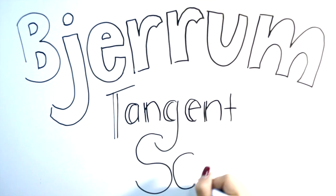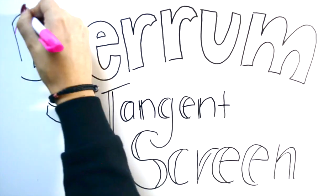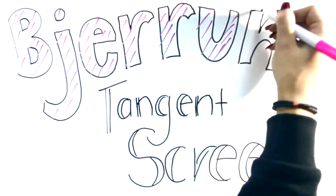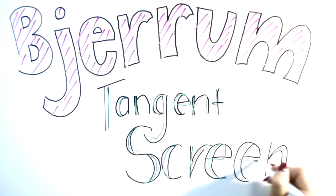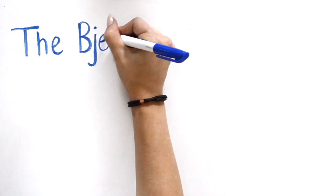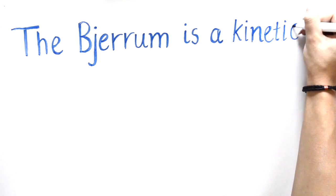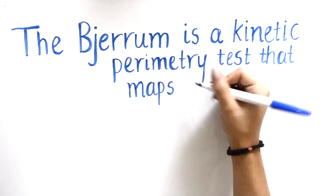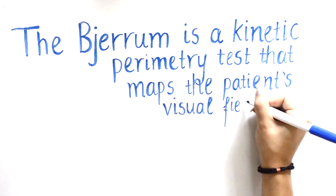This video demonstrates how to perform a visual field test using the Bjerrum tangent screen. The Bjerrum tangent screen, more commonly referred to as the Bjerrum, is a kinetic perimeter test that maps a patient's visual field.